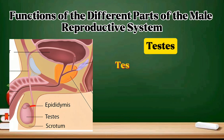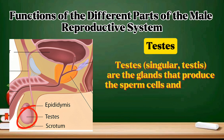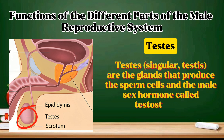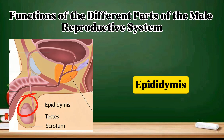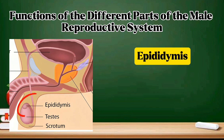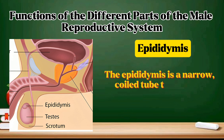Testes: the testes are the glands that produce the sperm cells and the male sex hormone called testosterone. Epididymis: the epididymis is a narrow coiled tube that stores sperm cells.